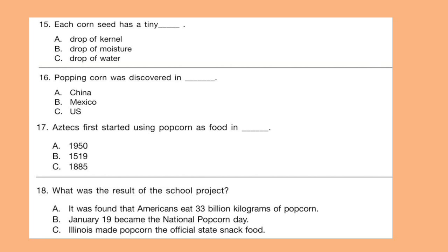Question 15: Each corn seed has a tiny dash. Question 16: Popping corn was discovered in dash. Question 17: Aztecs first started using popcorn as food in dash. Question 18: What was the result of the school project? Look at the options and write down your answer.